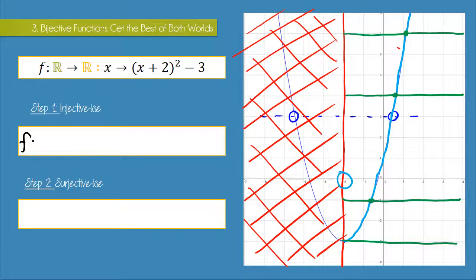So we have f maps our domain, which is minus two to infinity, and that maps to the set of real numbers. All our outputs are real. And our function is the same as before. It's a quadratic function x plus two squared minus three. And notice that I use the square bracket beside the minus two because I am including the minus two.